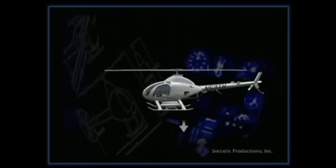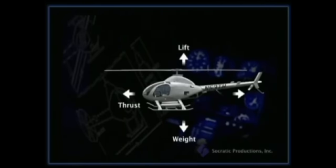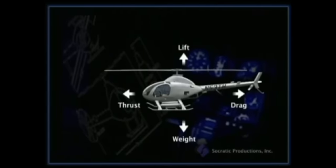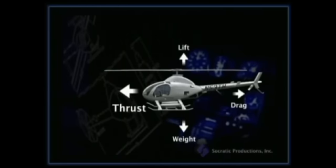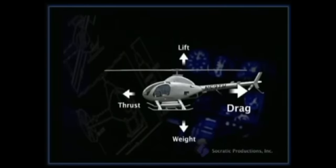So to sum up, the four forces acting on an aircraft in straight and level flight are weight, lift, thrust, and drag. Weight and lift are acting vertically, while thrust and drag work horizontally. If lift is greater than weight, the helicopter will move up. If weight is greater than lift, it will move down. If thrust is more than drag, the helicopter will move forward. If there is more drag than thrust, it will slow down or stop.